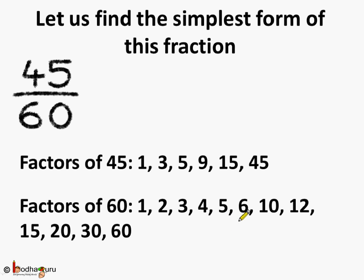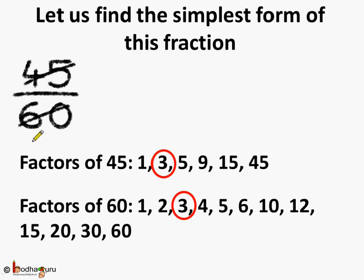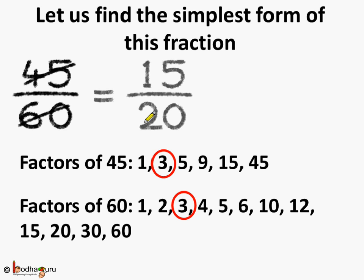5, 6, 10, 12, 15, 20, 30 and 60. So let's divide 45 and 60 by 3. If we divide 45 by 3, then 3 1s are 3 and 3 5s are 15. And coming to the denominator part, 3 2s are 6, 3 0s are 0. So we get 20. The fraction has reduced to 15 by 20.